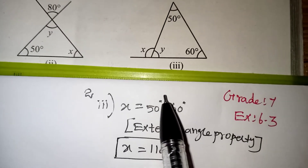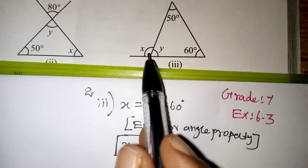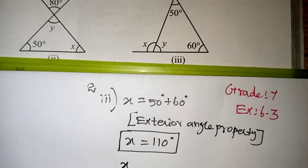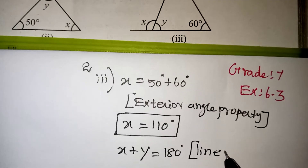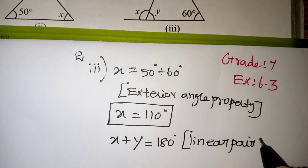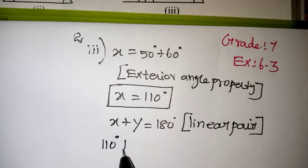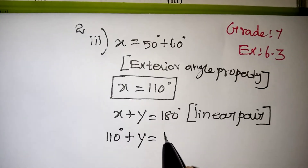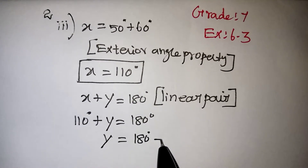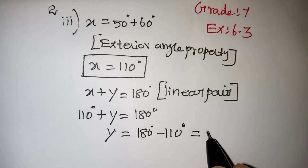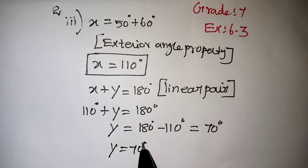Now we need to find the y value. By looking at the diagram, x and y are lying on the straight line, so we can say they are linear pairs. x plus y is equal to 180 degree because they are linear pairs — when we add them, the answer will be 180 degree since they form a straight line. In the place of x, we substitute 110: 110 plus y equals 180. Taking 110 to the other side gives minus 110, so 180 minus 110 gives y equal to 70 degree.